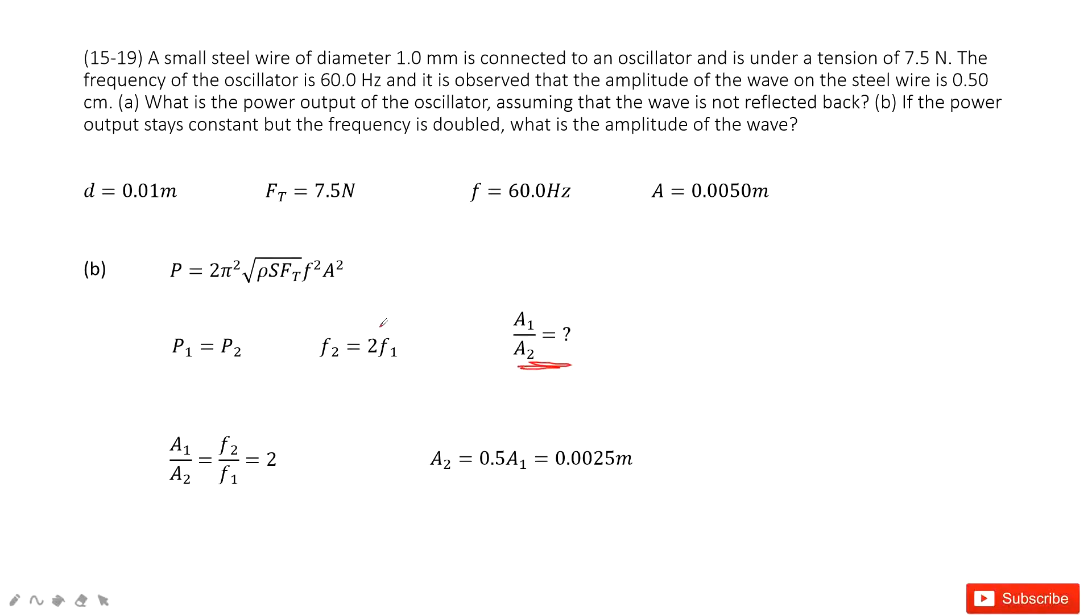Amplitude of the wave. It tells us if the frequency is doubled. And for this case, we can say power is constant. So make P1 equal to P2, F2 equal to 2 times F1. Ask you to find A2.